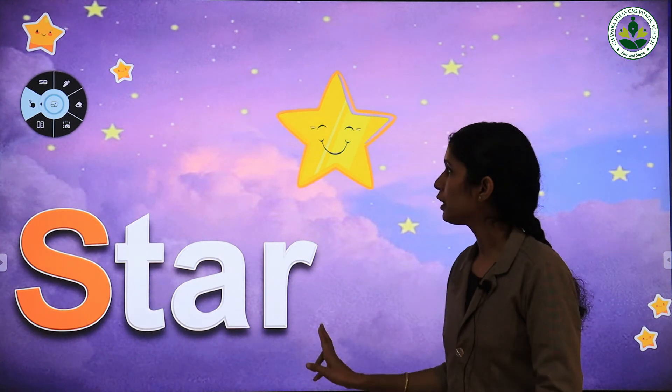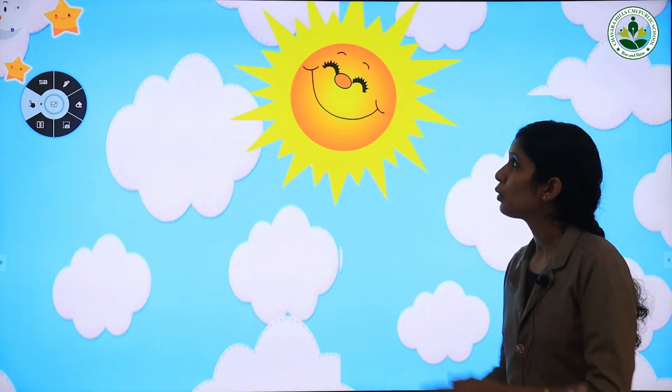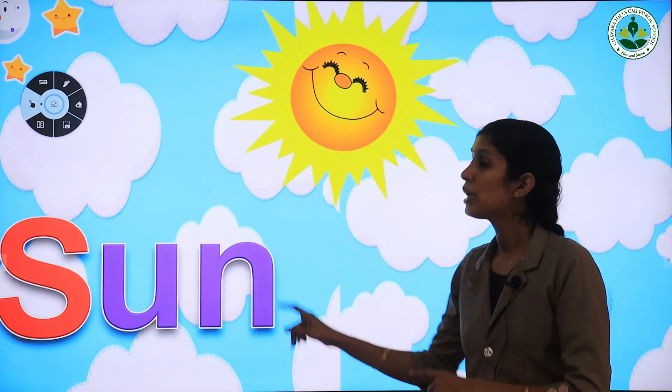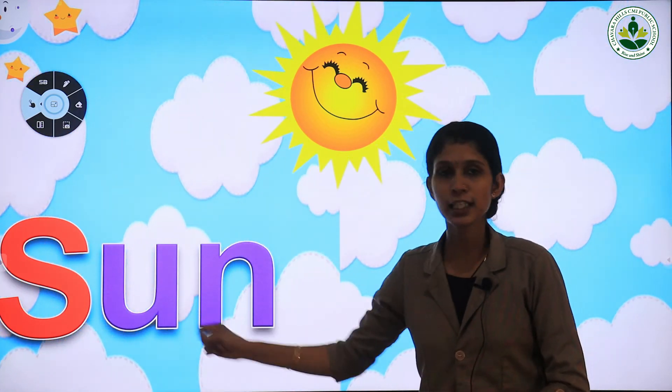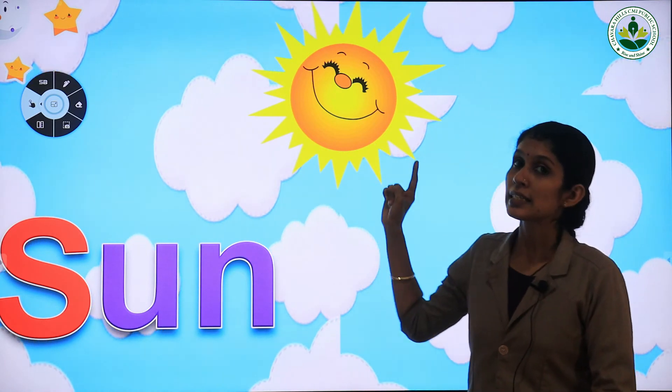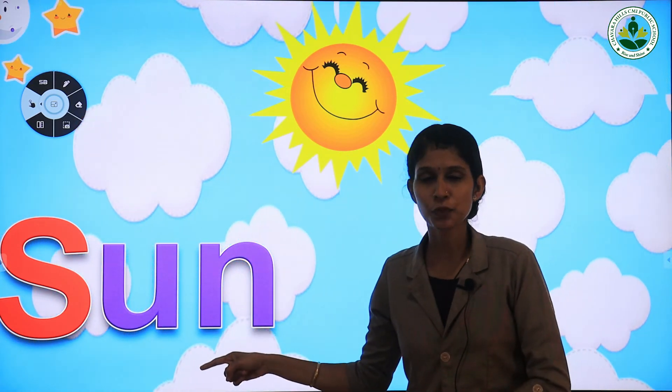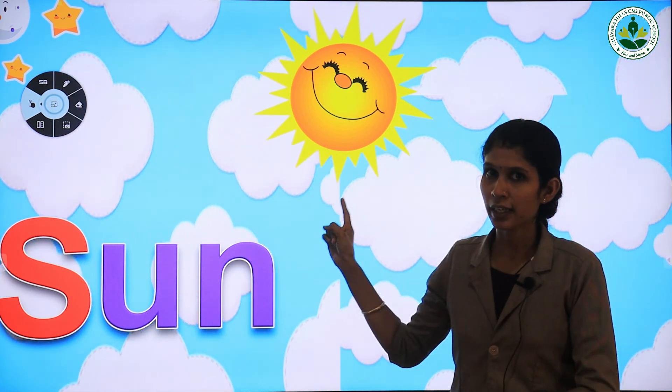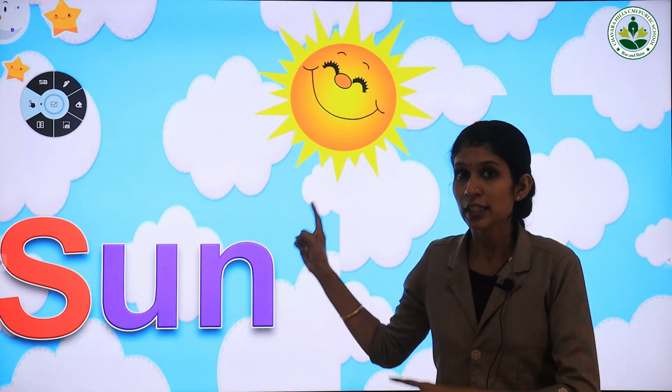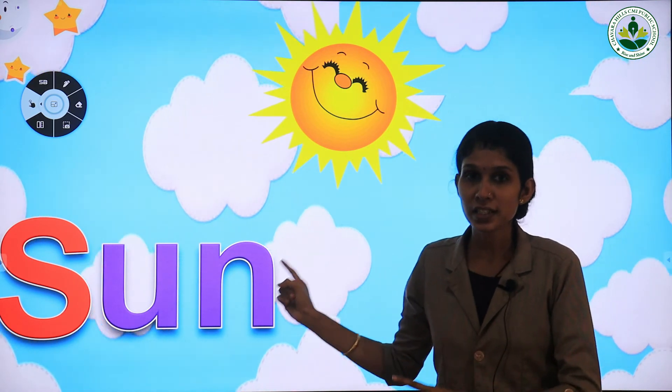Our next word starts with letter S. Look at here — what is this? Yes, sun. Isn't it? What is this? Sun. Very good. Letter S is for sun. Repeat after me: S is for sun. Say once again: S is for sun.